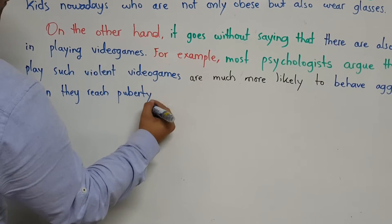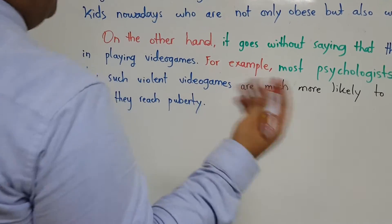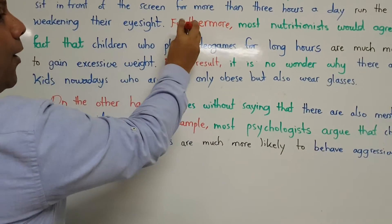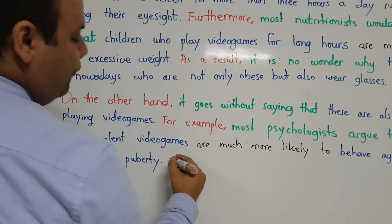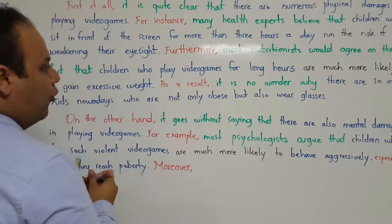Puberty is the synonym for adolescence. When they're like 14, or maybe 12 to 13, right? So now we go to the next part. Here I use furthermore. Now I'm going to change furthermore to moreover.